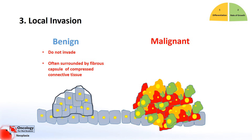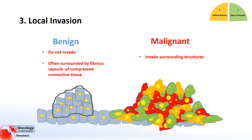Malignant tumors, on the other hand, do invade the tissues around them. The invasion and destruction of surrounding tissues means it's difficult to work out where the edges are and cut them out, and they can grow back if they aren't completely removed.